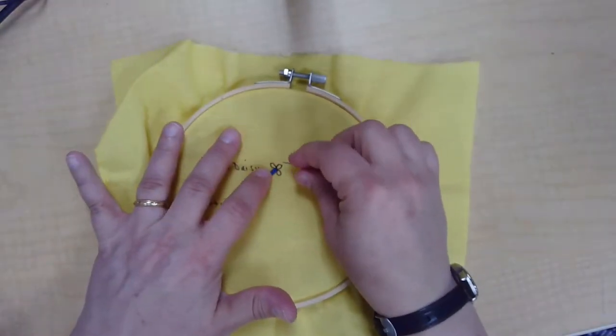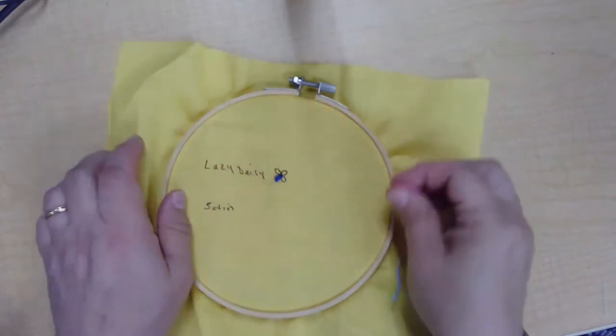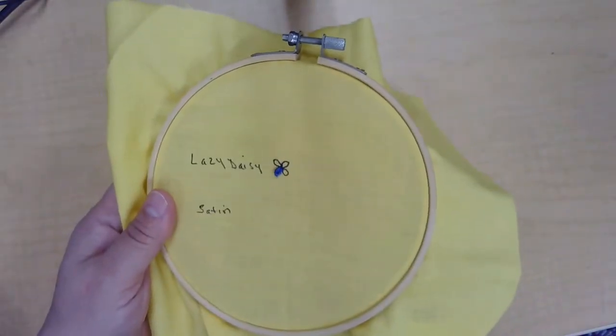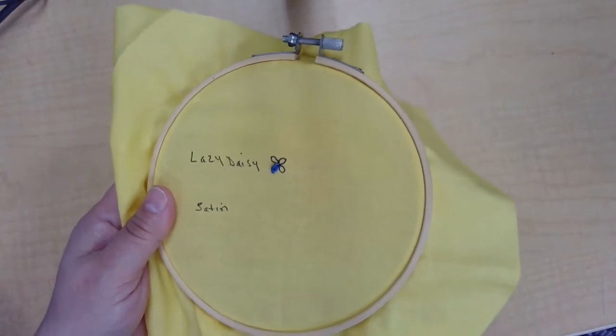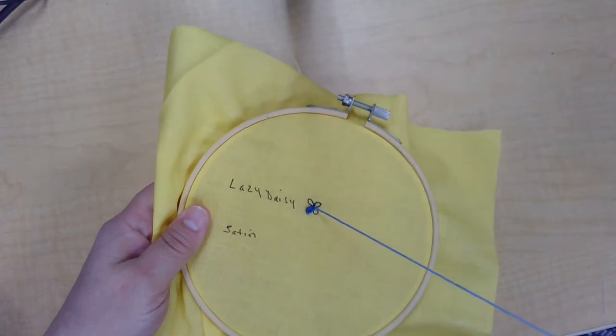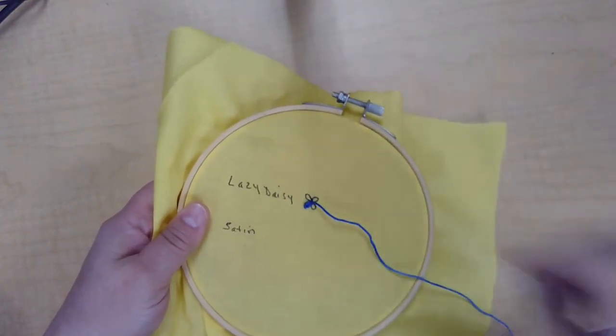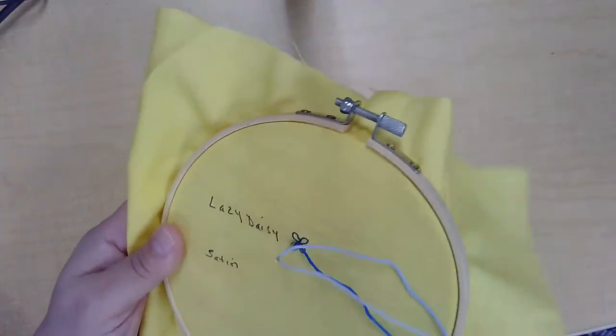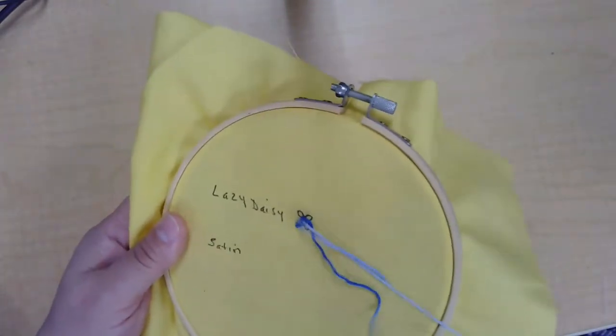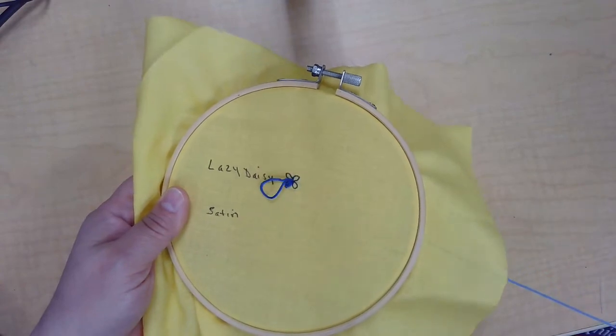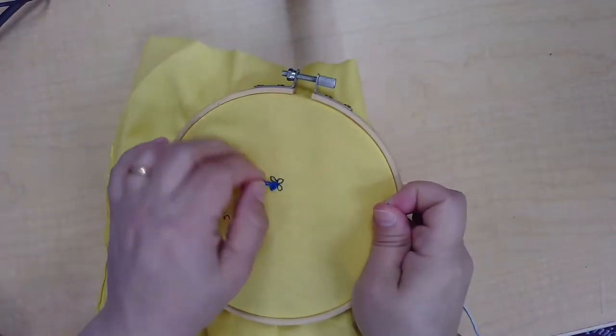You might need to spread your petal apart a little bit with your needle if you've pulled too hard. And then you're going to repeat that for as many petals as you want. Come up at the middle of your flower, back down next to it, pulling slowly so that you catch the loop or so that you leave a loop and then catch it at the top of the petal.